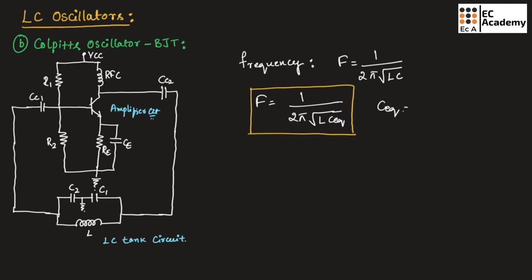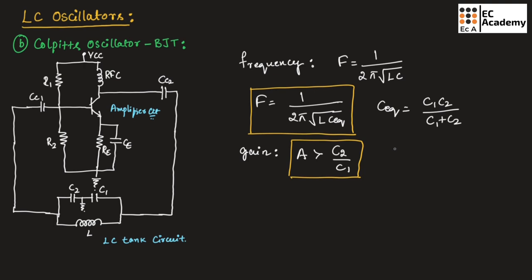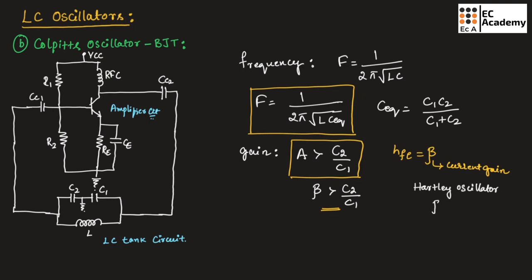The gain of the Colpitts oscillator: beta (current gain HFE) should always be greater than C2 / C1. So beta > C2 / C1 for the Colpitts oscillator. Similarly, for the Hartley oscillator, the gain in terms of current gain is beta > L1 / L2.